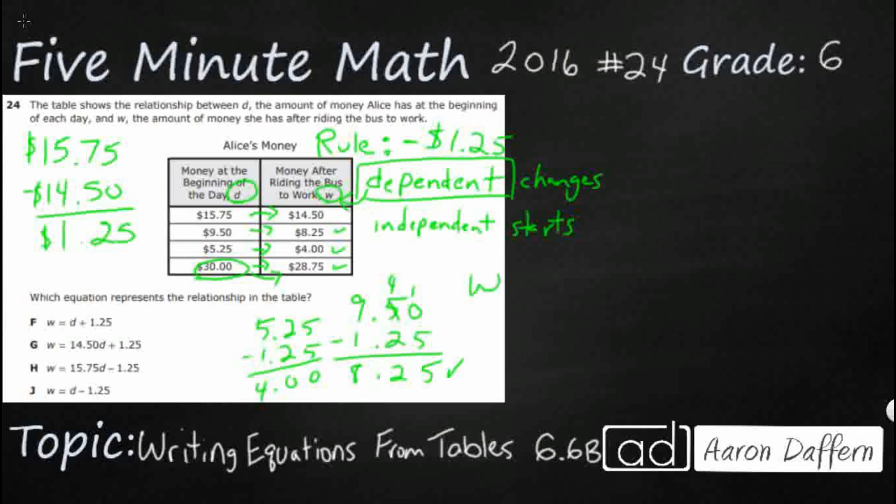So W is our dependent variable, because that amount of money changes based on what she uses it for. In this case, she's using it for a ride to work. So we're actually starting each of our equations with the independent variable. So our independent variable is D.